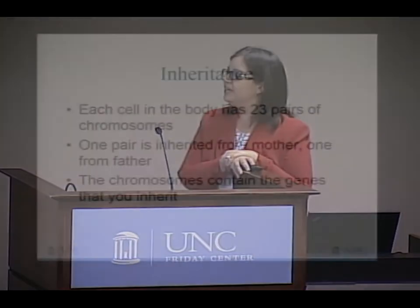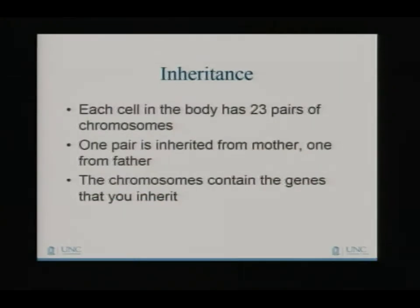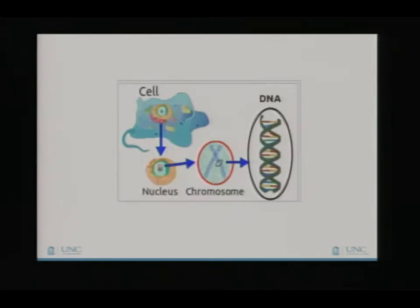More about inheritance: each cell in the body has 23 pairs of chromosomes. One pair comes from mom, and the other pair comes from dad, and the chromosomes contain the genes that you inherit. I really like pictures, so this is a nice picture of a cell, the nucleus within the cell, the chromosome within the nucleus, and the DNA within the chromosome — a nice visual of how all of these really complicated, invisible processes work together.